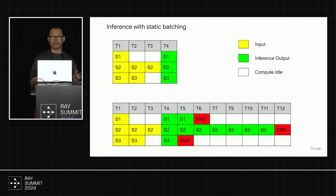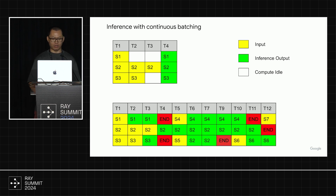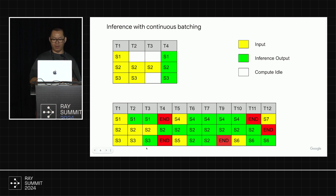Another slide shows the difference between static batching and continuous batching. Static batching is easy to implement — you wait for all requests to be ready, you compute, and after everything finishes, you release the resource. But if you see the white parts, this is compute idle. Two things cause compute idle: I need to wait for every request to arrive, and I need to hold the resource until the longest sequence finishes. You can see almost half of them are compute idle. With continuous batching, once a request comes in, I can process it as soon as possible. And after a short sequence finishes, it releases that resource slot. With continuous batching, there's almost no compute idle.